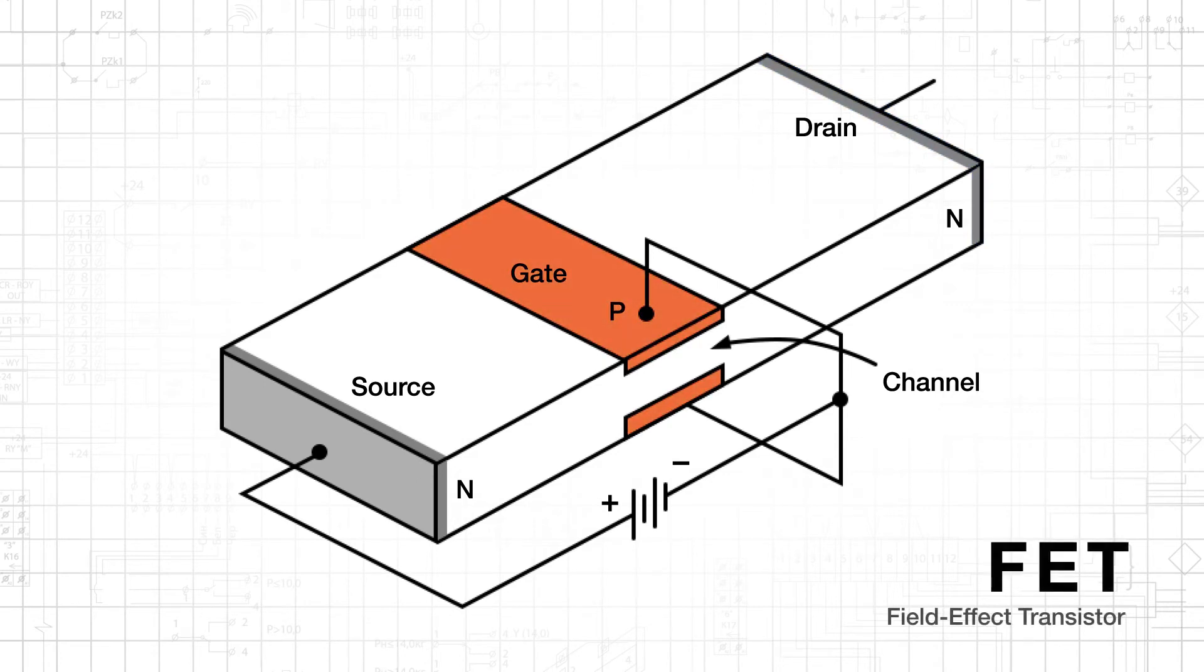Though this diagram helps to introduce general FET operation, it is actually depicting a relatively uncommon device called a junction field effect transistor, or JFET, but the majority of FETs are metal oxide semiconductor field effect transistors, or MOSFETs.